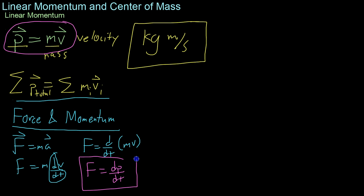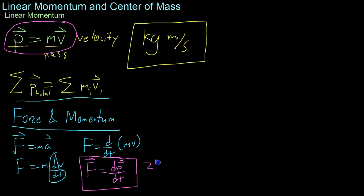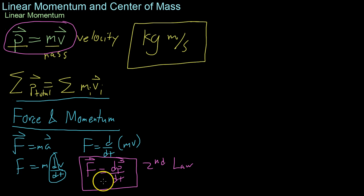That's actually how Isaac Newton, who came up with most of these laws, thought of momentum and force. This is another way of writing Newton's second law. Instead of F equals MA, you get F equals dp/dt.